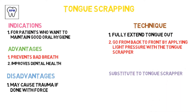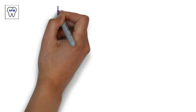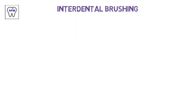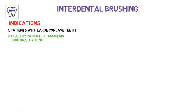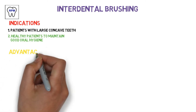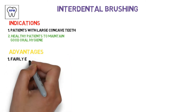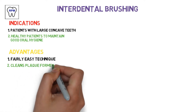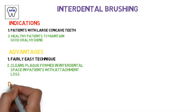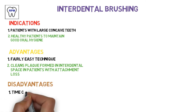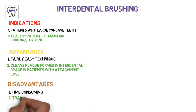Substitutes for the tongue scraper include a toothbrush and floss. Moving on to the interdental brush. Its indications: patients with large concave teeth, and healthy patients who want to maintain good oral hygiene. Advantages: it is a fairly easy technique, and it cleans black triangles in interdental spaces in patients with attachment loss.